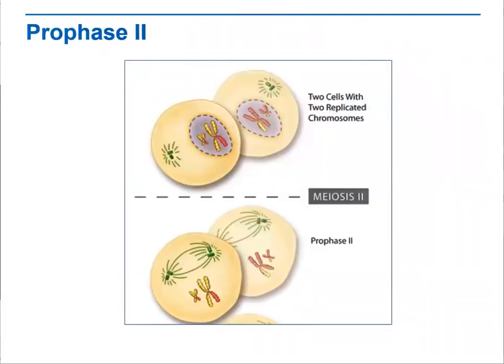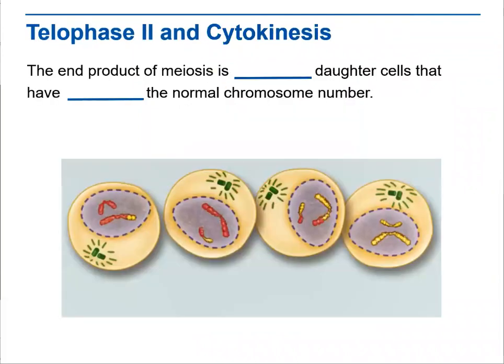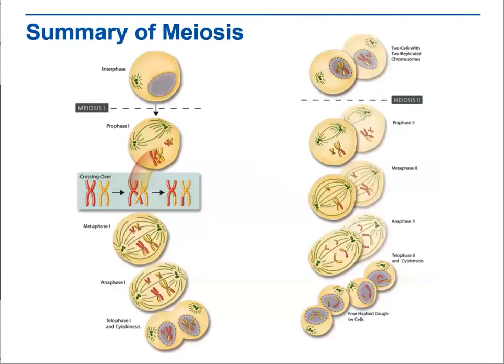When we go to prophase two, which is meiosis two, we start to find the difference between the two chromosomes that went through crossing over. Metaphase two and anaphase two reoccur with two different characteristics for each chromatid. The product of meiosis produces four different daughter cells that have the normal chromosome number, which is 23 chromosomes.